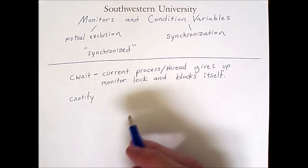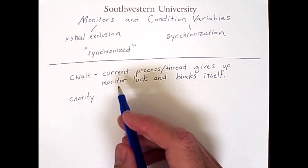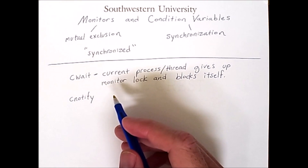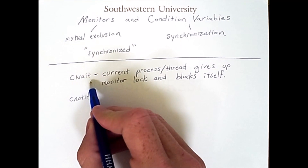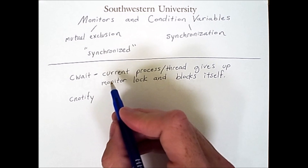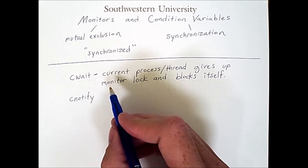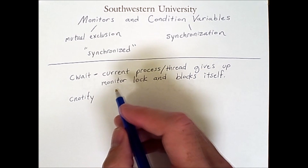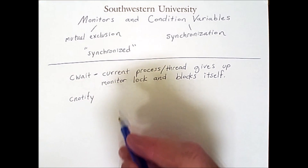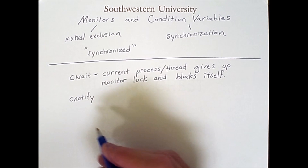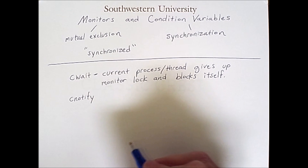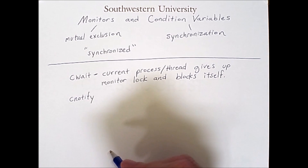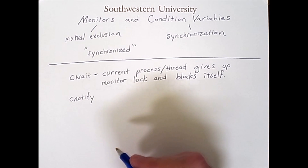As with semaphores, each condition variable has a queue associated with it. So when you tell a particular condition variable to wait, it puts the thread or process in the queue associated with that variable. Later, some other thread or process using the monitor might execute c_notify on that condition variable. When this happens, it causes the next thread or process in that queue to be released, making it able to run.